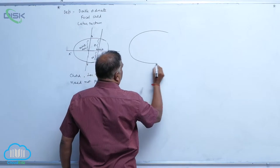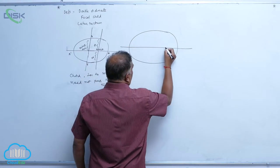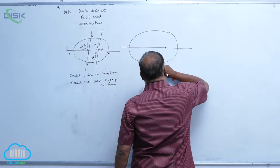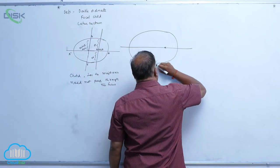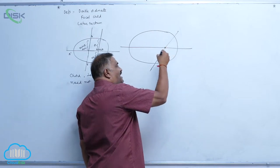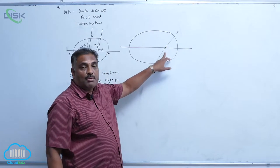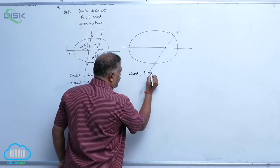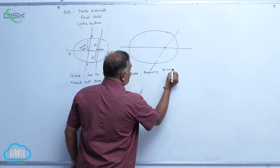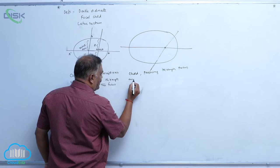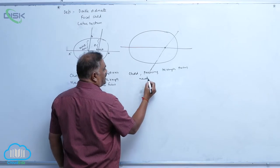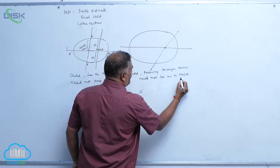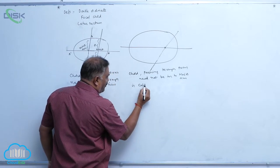Now let us come to the definition of focal chord. An ellipse has two foci. Any chord passing through a focus, but need not be perpendicular to the major axis, is called a focal chord.